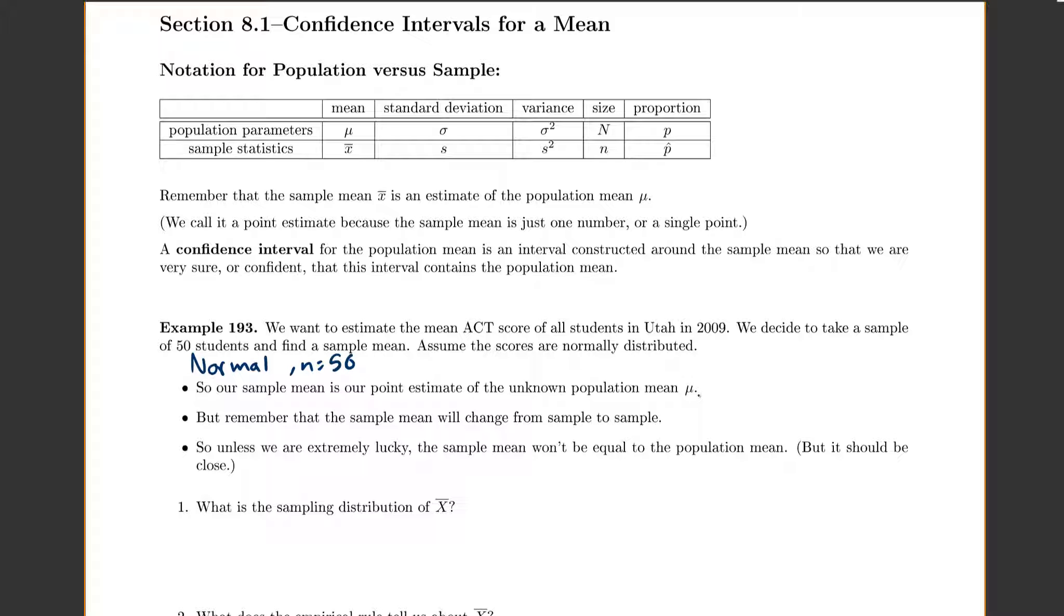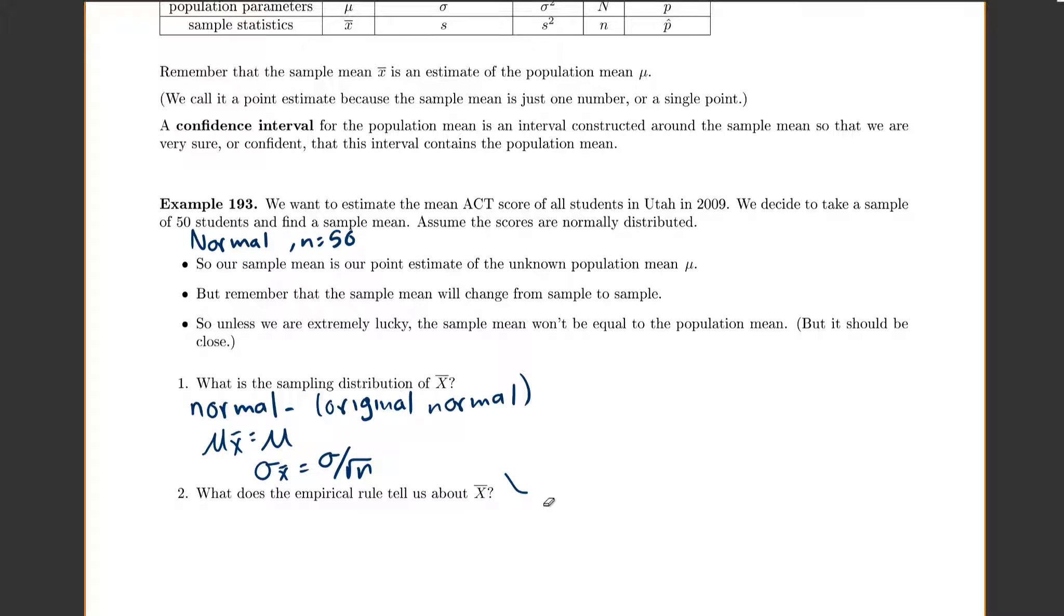But it should be fairly close. So because we know it's probably not going to be exactly equal, that's why people said, let's make an actual interval. Let's tell people an interval instead of just a number. So first of all, what will our sampling distribution be? The sampling distribution of x-bar is going to be normal because our original is normal. Our mean for x-bar is equal to mu, and our standard deviation for x-bar is sigma over square root of n.